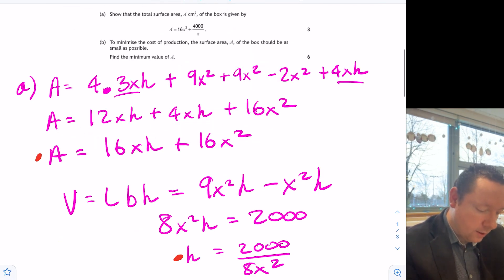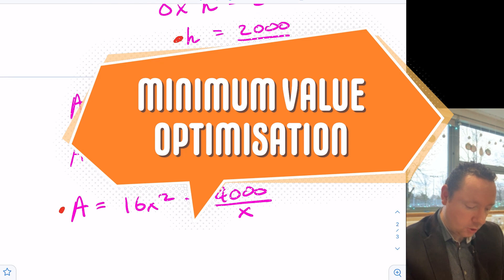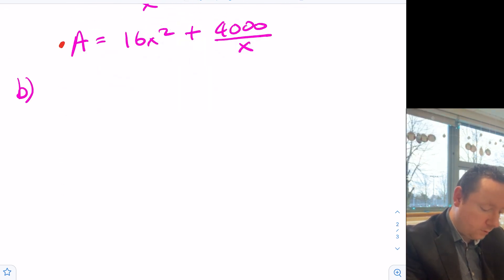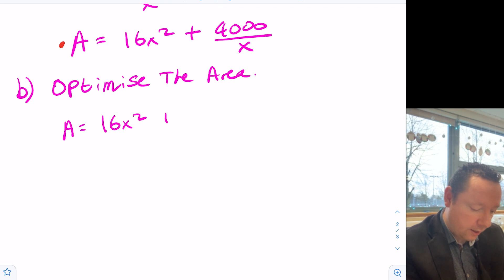Part B said, to minimize the cost of production, the surface area A of the box should be as small as possible. Find the minimum value of A. Minimum value optimization. Let's jump straight in. Part B I want to optimize the area. To differentiate a function we need to get it ready. So let's start with our area. We've got 16x squared. But I'm going to have to take that 4,000x to the minus 1 so I can differentiate it. And you'll actually get a mark straight away there for getting it ready.